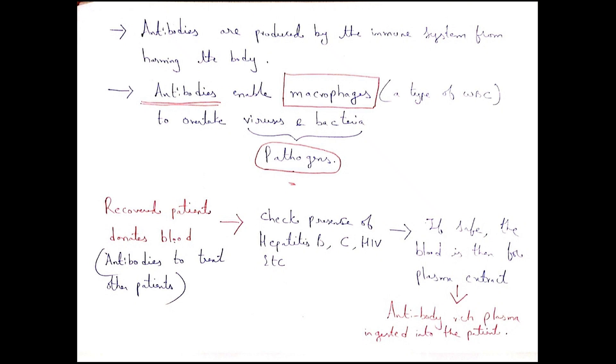Antibodies enable macrophages - that is a type of white blood cell - to help overcome the pathogens.